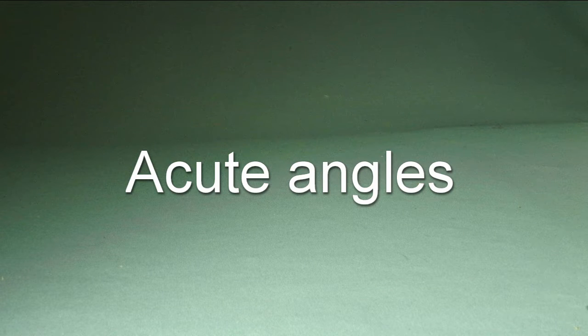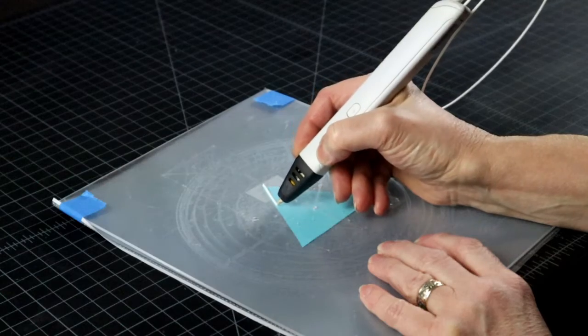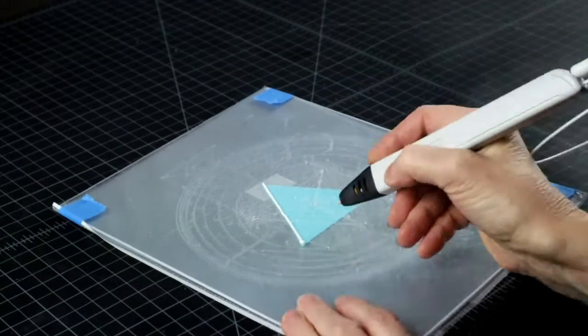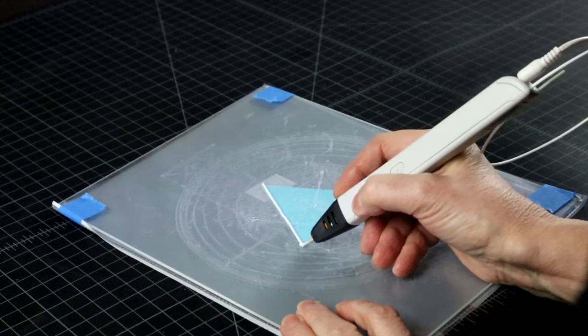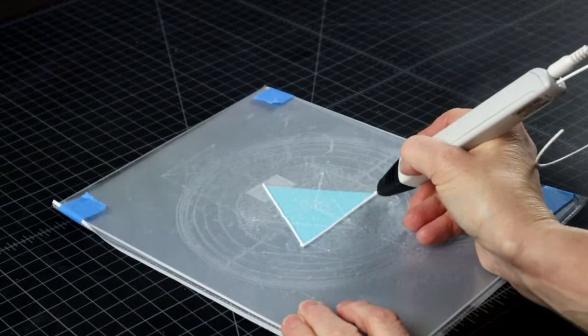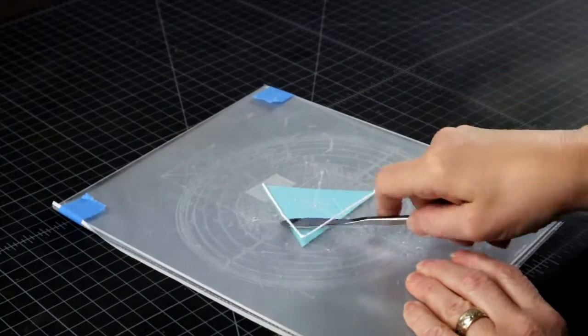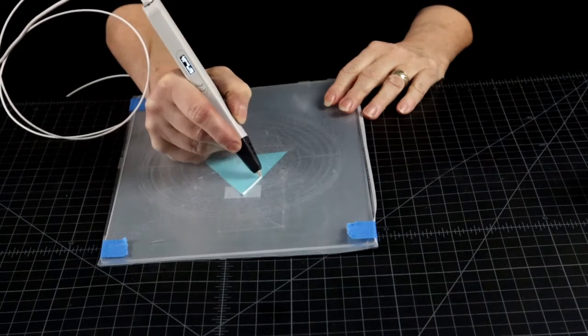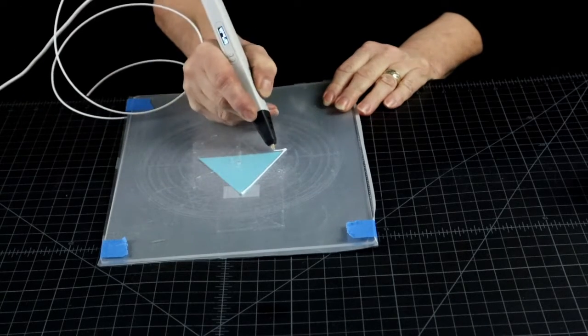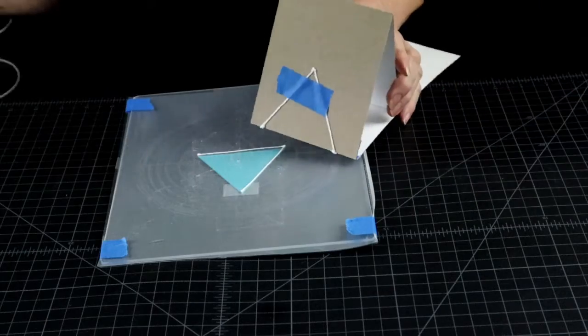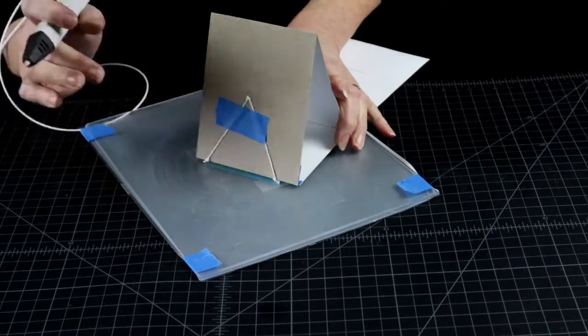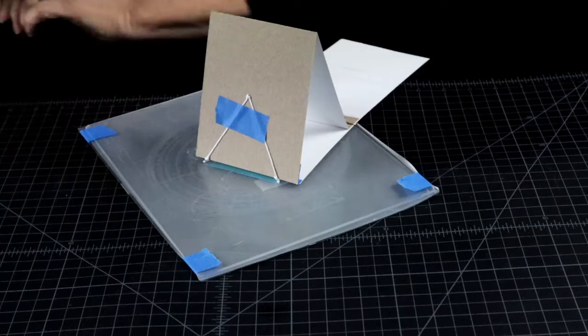The problem with angles smaller than 90 degrees is that we usually don't have enough access with the pen to reach into such a tight corner. So we'll need a strategy to sneak upon it. First, I'll make just two sides of my triangle. And then two sides of the next triangle. And then join them from the outside where the angle jig is not in my way.